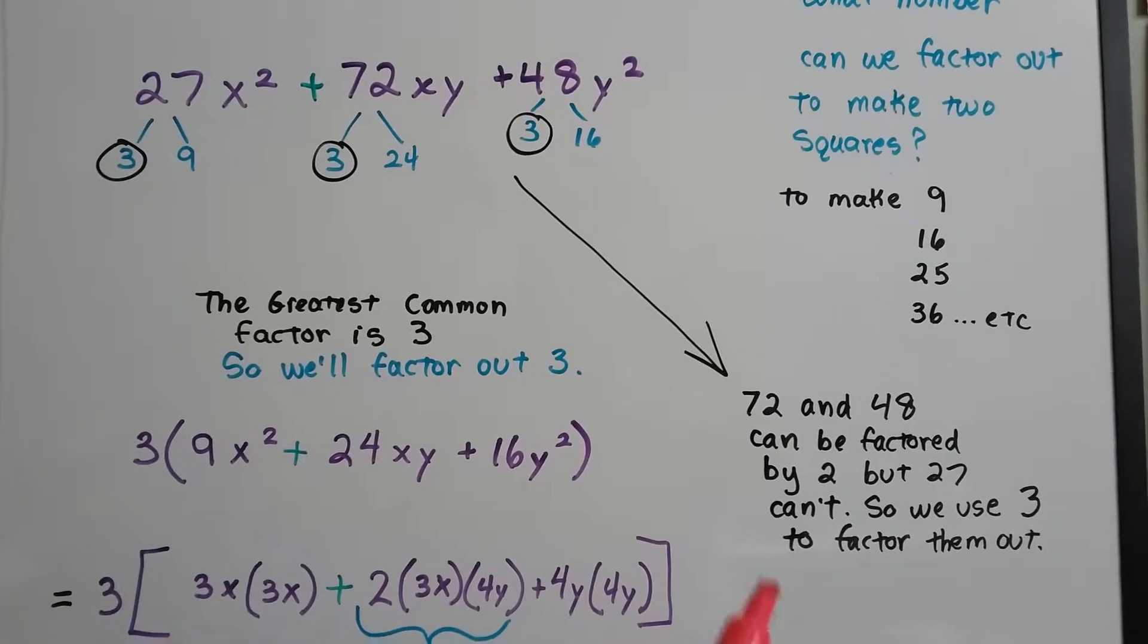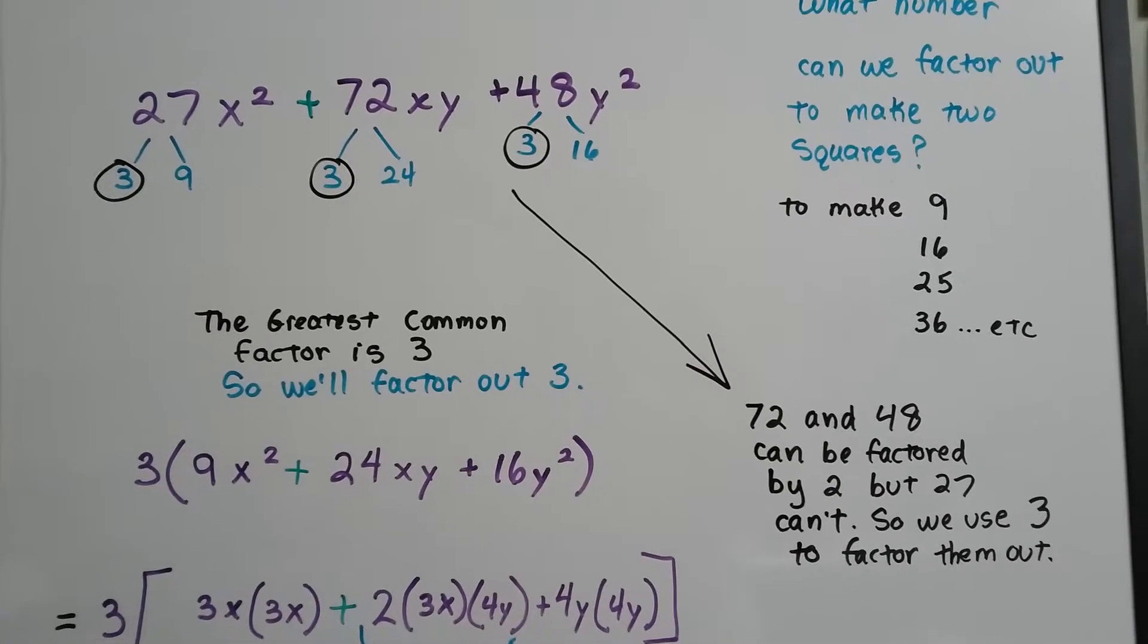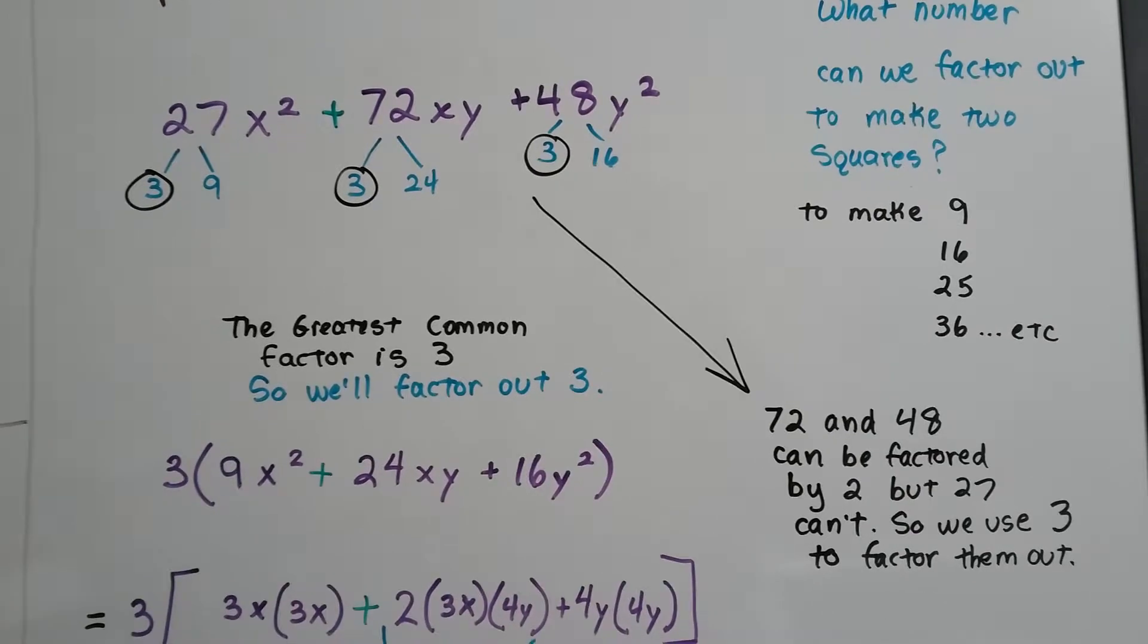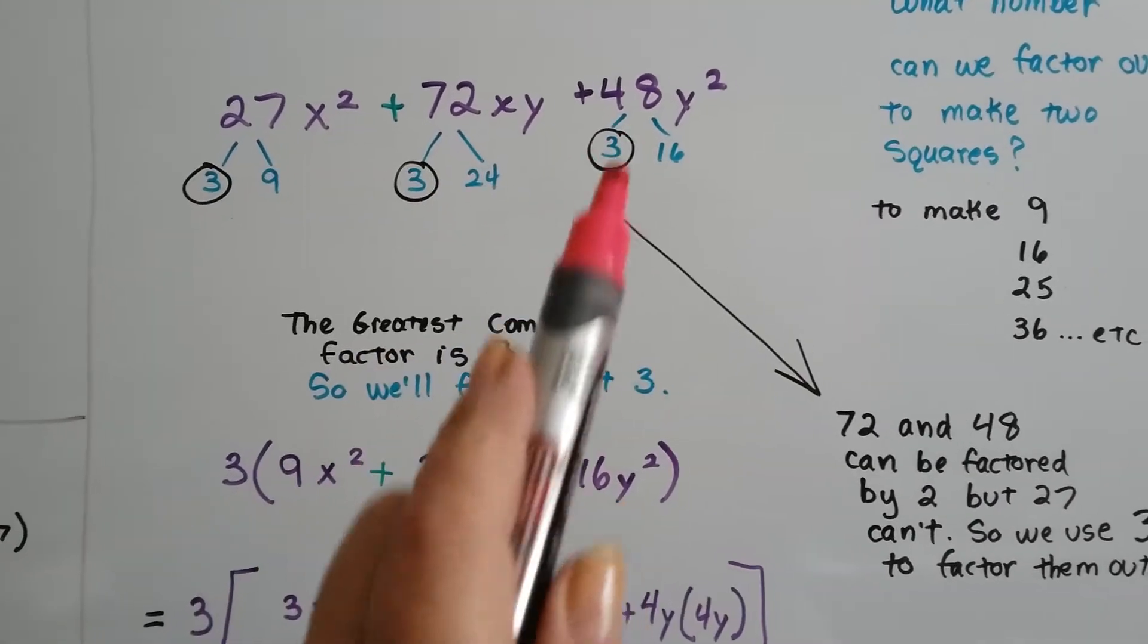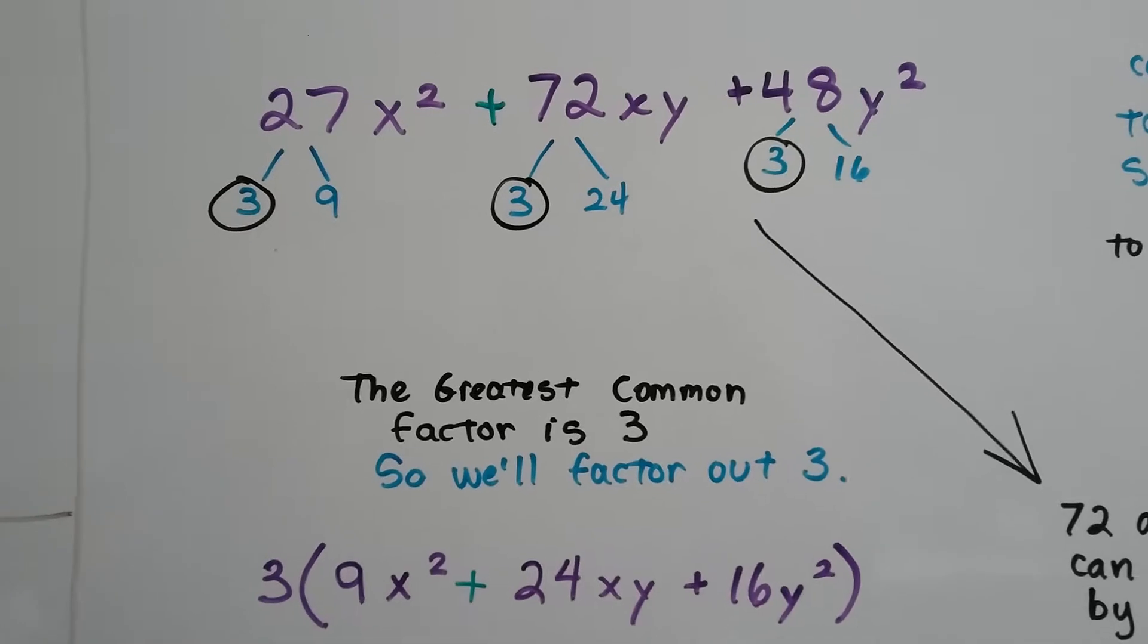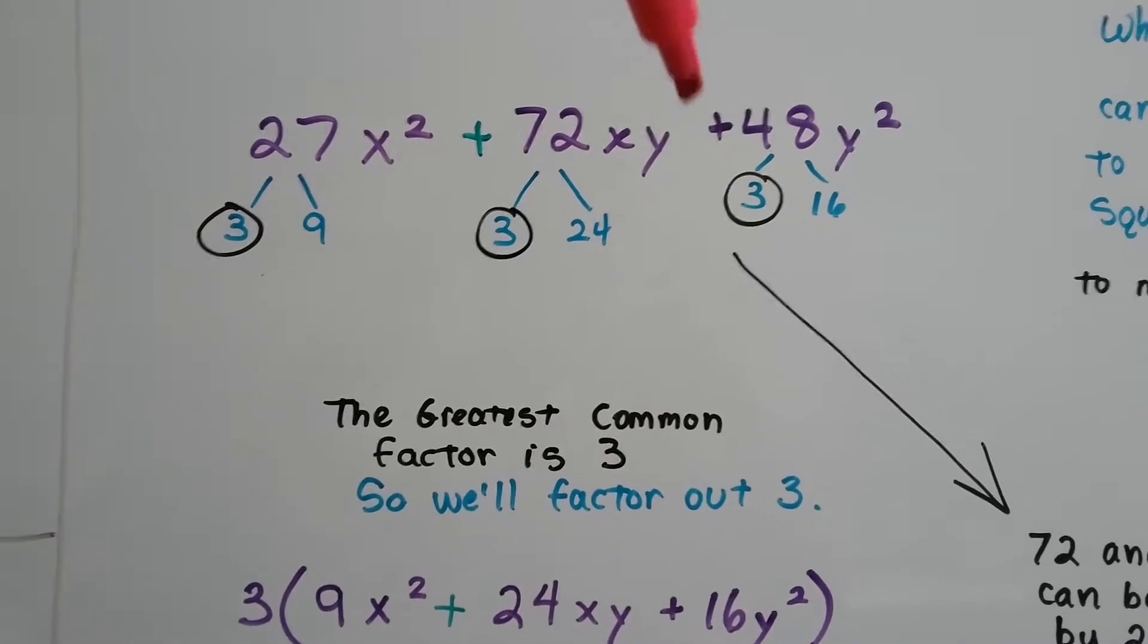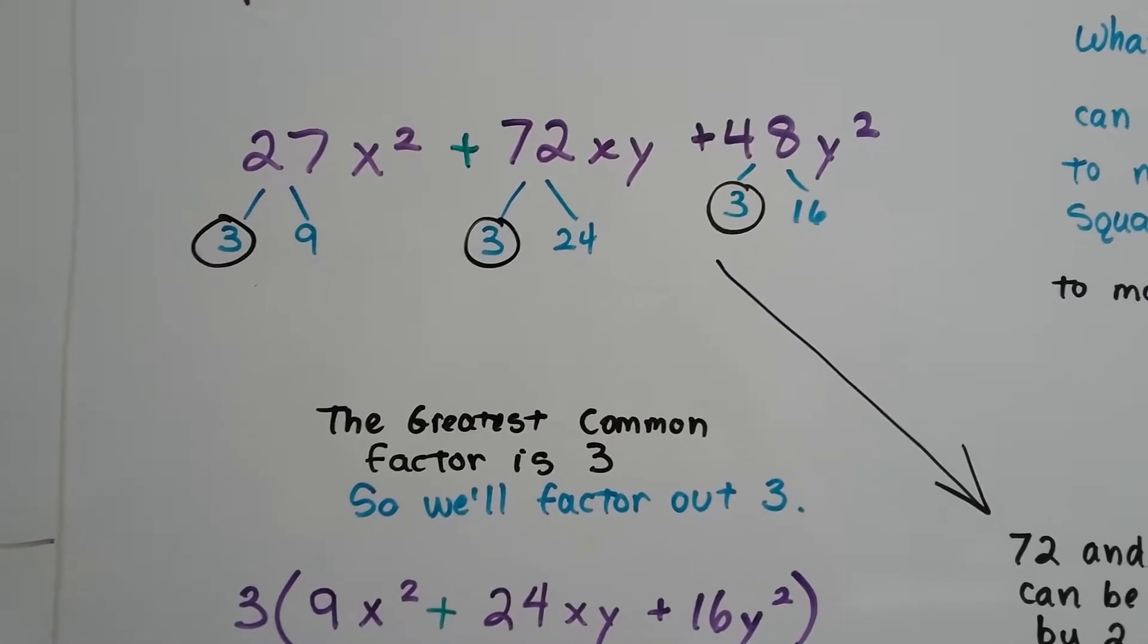So we're going to use a 3 to factor out the 72 and the 48. Can't use a 2. This one can't use a 2, so we can't use it for these guys. So 72 divided by 3 is 24.